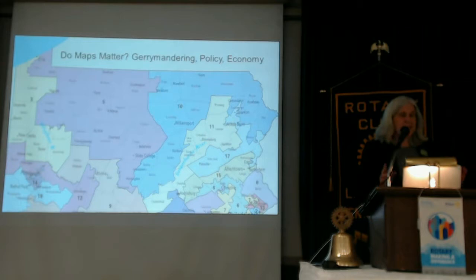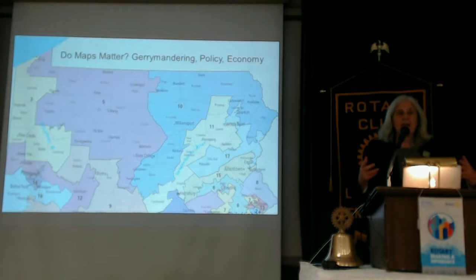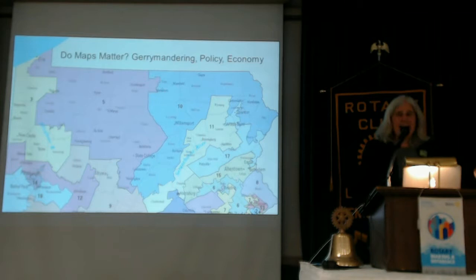There's a census every ten years that starts in a zero year. After that, Congress gets the data, and then they have to redivide all those 435 seats across all the states. Pennsylvania historically loses a seat. We're pretty much guaranteed to lose a seat in the next reapportionment. Last time we had 19, we went to 18, and we'll be going to 17. That's the first word you need to remember: reapportionment.